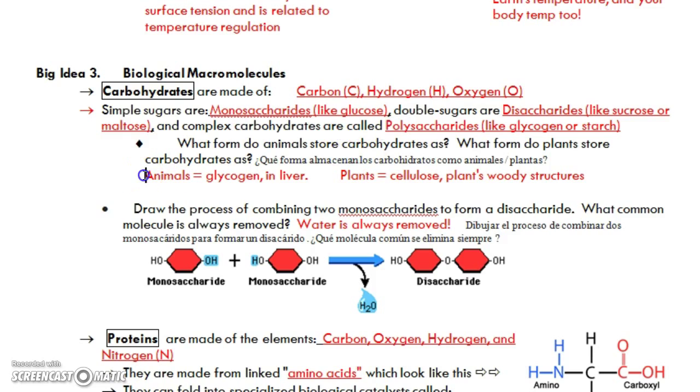All of us animals store our carbohydrates as glycogen in the liver. And we can release those carbohydrates for energy from our liver with different hormones. Plants don't have a liver. So they store their carbohydrates as cellulose. And cellulose is what makes up all the plant's woody structures. So when you cut down a tree, most of that is cellulose.